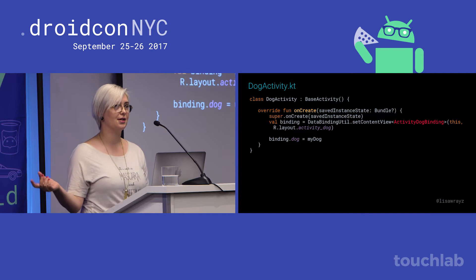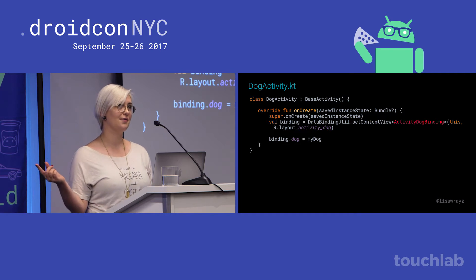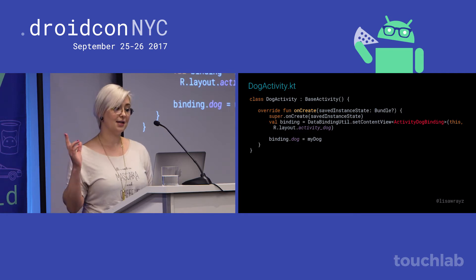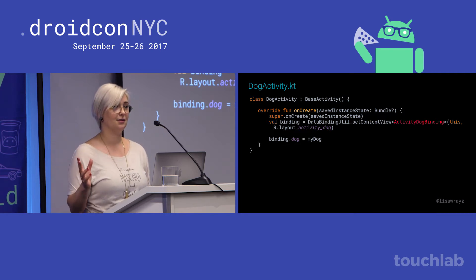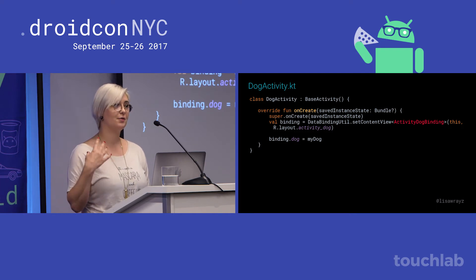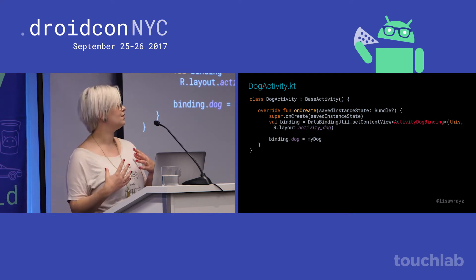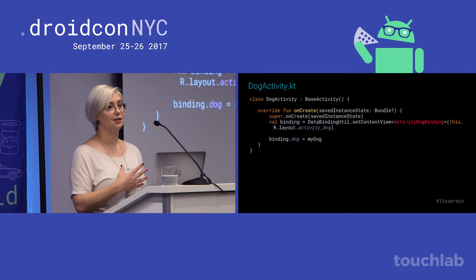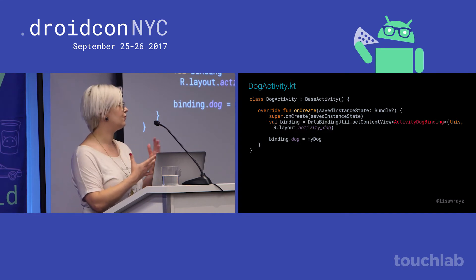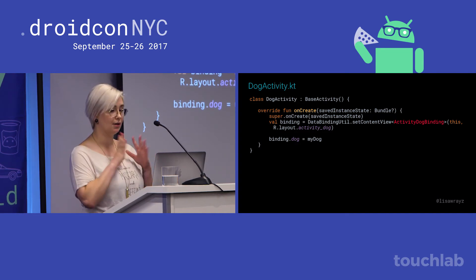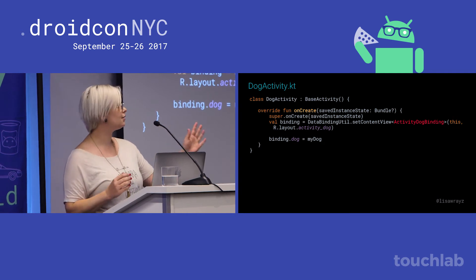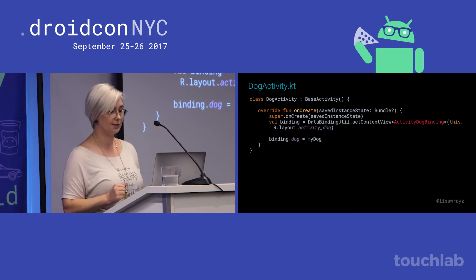What don't you see here? You don't see any findViewByID. You don't see any setters. And you don't see any getters from the model. All the boilerplate legwork of wiring up a view to a model object — in this case three findViewByIDs followed by three setters — is done for us. This is literally all the code there is.